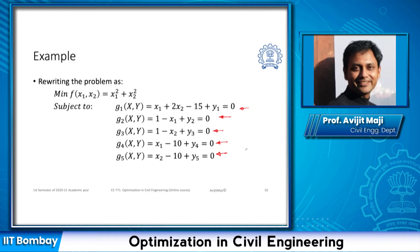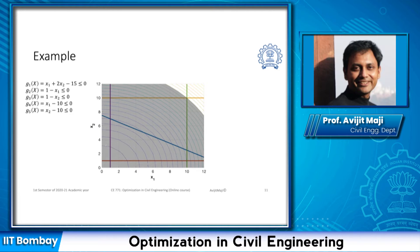To understand the directions we were talking about, let us represent this in a graphical format. My objective function represents a circle, so these are my objective function values for different combinations of x1 and x2. The first constraint is x1 plus 2x2 less than 15, shown here. That constraint is my g1.